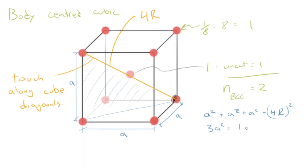Three A squared is equal to 16 R squared. A is equal to four over root three R, and that is true for BCC.